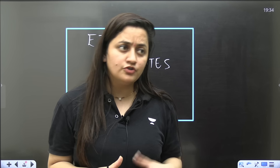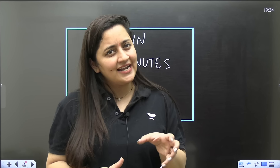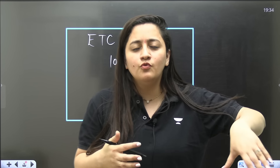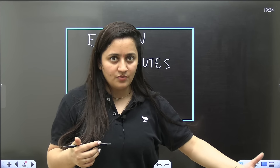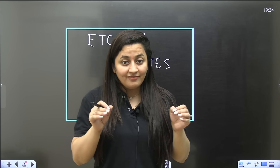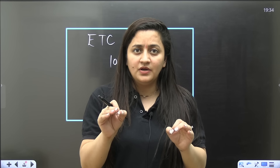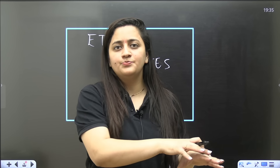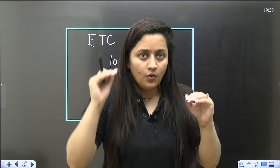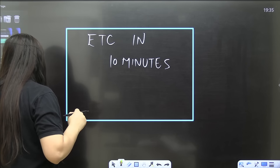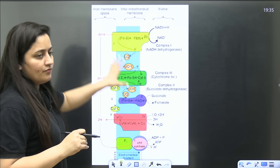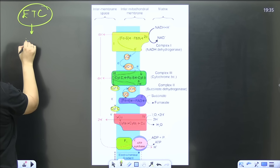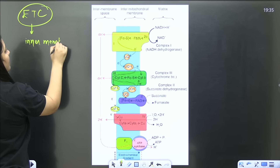The electron transport chain is a very interesting topic, but it is a little difficult because you are not able to understand how that movement works, how those protons are moving. I will explain it in a very simple way that will help you score marks from this topic in your NEET examination. So let's start — the very first thing we know is this diagram which is given in NCERT when you talk about the electron transport chain.